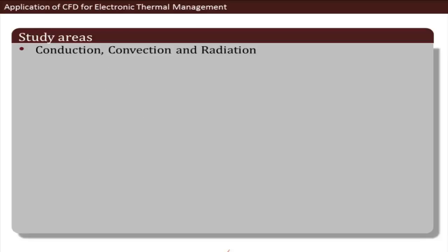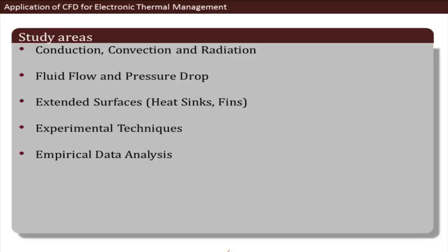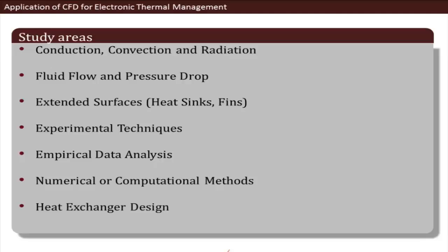To study temperature issues within an electronic system, we must model physics such as conduction, convection, radiation, fluid flow, and pressure drop. Extended surfaces and conduction between them must also be considered. External techniques can be combined with simulations for better designs, and empirical data along with numerical methods and standard practices can all be used.